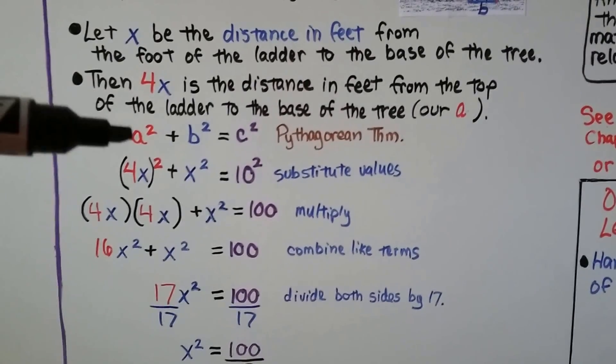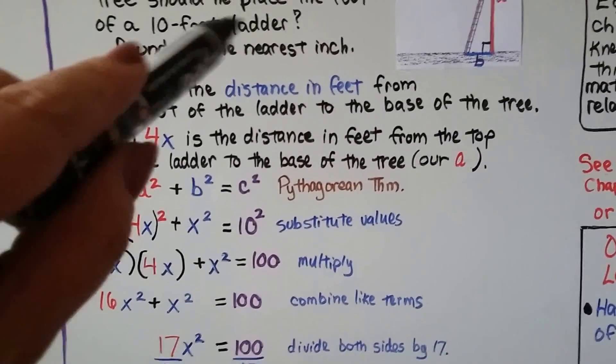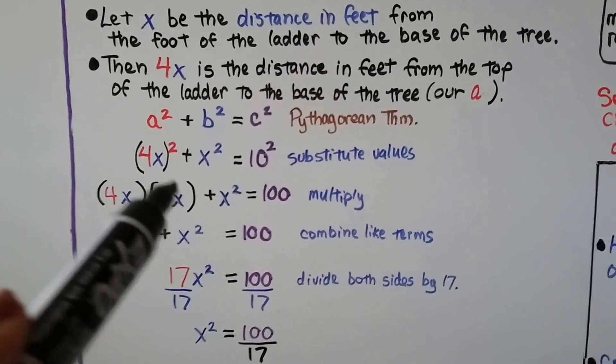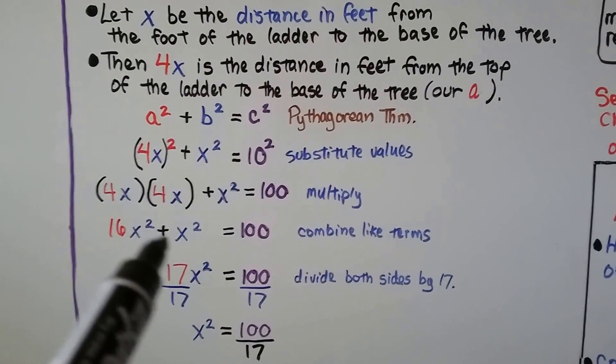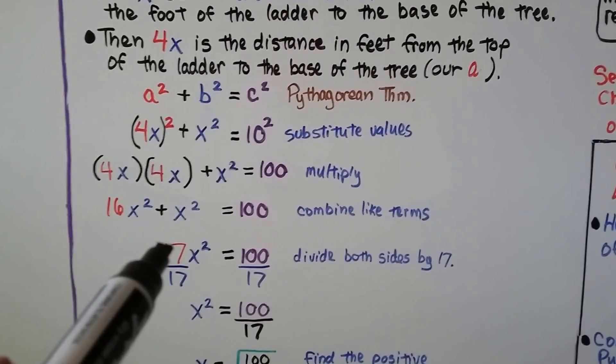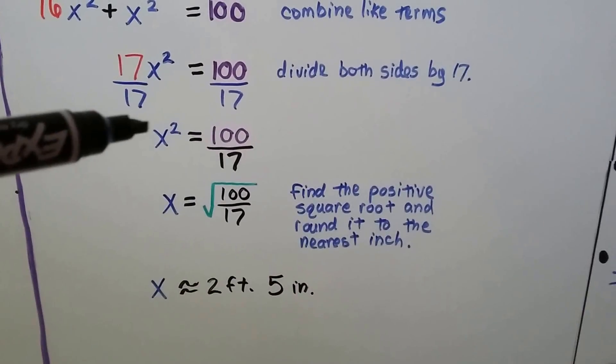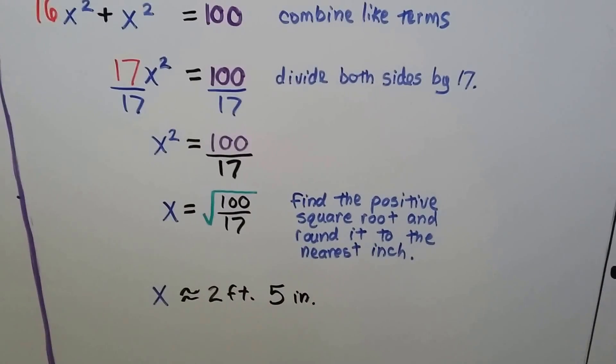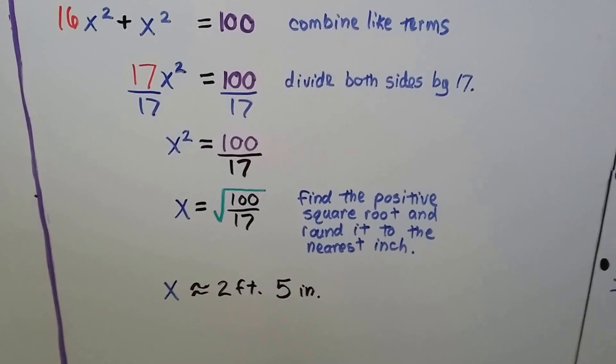So here's our Pythagorean Theorem. We substitute our values in. Our A is 4x. We have 4x squared plus x squared equals 10 squared, because the ladder is 10 feet long. That's our hypotenuse. 10 times 10 is 100. Our 4x squared is going to be 4x times 4x. That's 16x squared. Plus we drop down this x squared. We can combine like terms. We have 16x squared plus 1x squared. That gives us 17x squared. And it's going to equal 100. We divide both sides by this 17 coefficient. And we get x squared is equal to 100 over 17. We can take this little 2 away from the x, this exponent, by putting a radical around the other side. We find the positive square root and round it to the nearest inch. And we get x is approximately 2 feet 5 inches. You might get 2 feet 4 inches. But it's approximate.